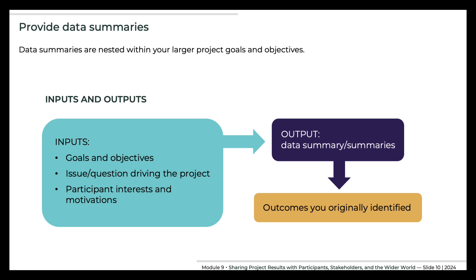Citizen science is only one of many threads of information used when making management decisions. Sometimes a decision may not align precisely with the science, but the science still may inform how a decision is implemented. Reporting project findings also should help participants understand how the results apply to them. For this reason, you need to understand the interests and motivations of your participants. Then you can share results and their meaning in ways that make sense to the participants and are relevant to what they want or need to know.